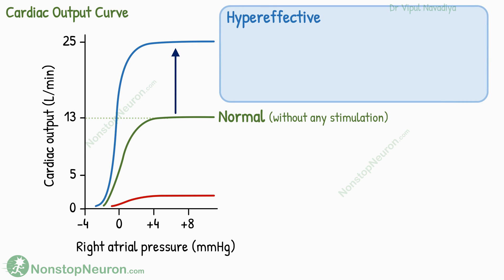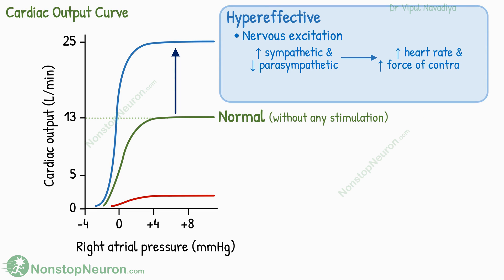Let's talk about the factors that make the heart hyper-effective. The first factor is nervous excitation of the heart. An increase in sympathetic activity or decrease in parasympathetic activity to the heart causes an increase in heart rate and increase in the force of contraction, so the capacity to pump out blood increases.